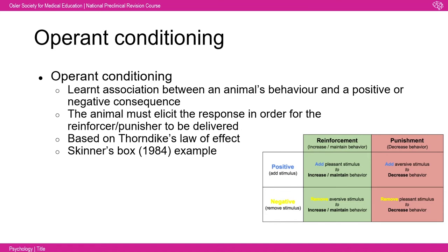Thorndike's law of effect states that responses followed by positive consequences are more likely to be performed in the future, and vice versa. Positive reinforcement involves a pleasant stimulus following a desired behavior, increasing its likelihood. Positive punishment involves an unpleasant stimulus after an undesired behavior, decreasing its likelihood. By varying how behavior is reinforced and punished, you can shape an animal's behavior.